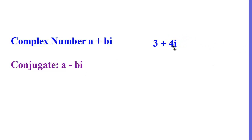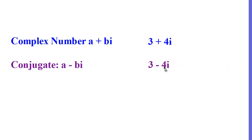For example, if we have the number 3 plus 4i, where 3 is the real part and 4i is the imaginary part, its conjugate will also have a real part of 3, but its imaginary part will be minus 4i. So the conjugate of 3 plus 4i is 3 minus 4i. They are conjugates.